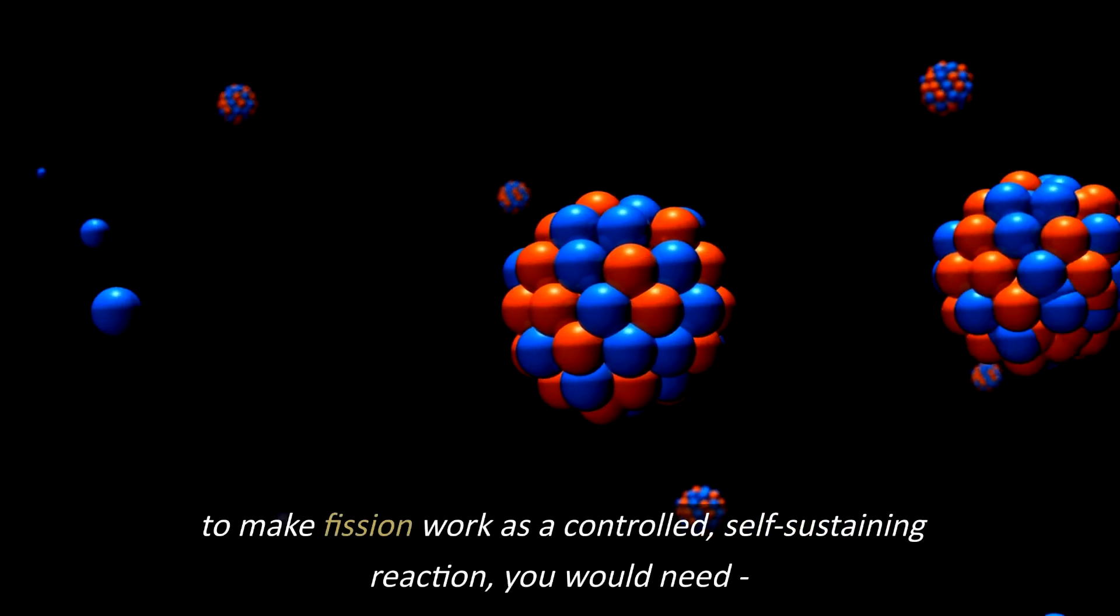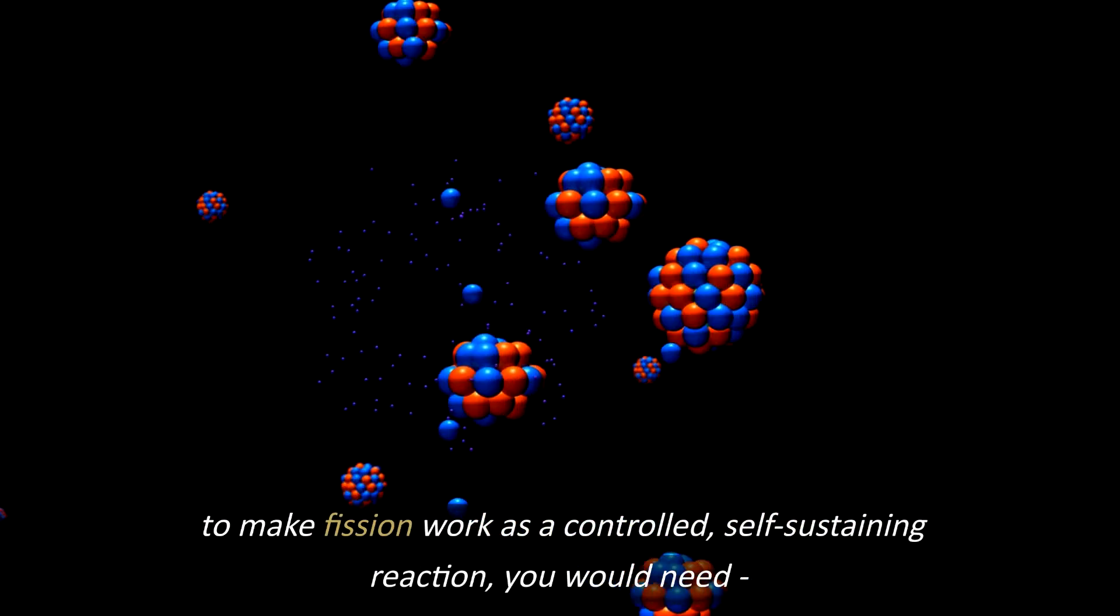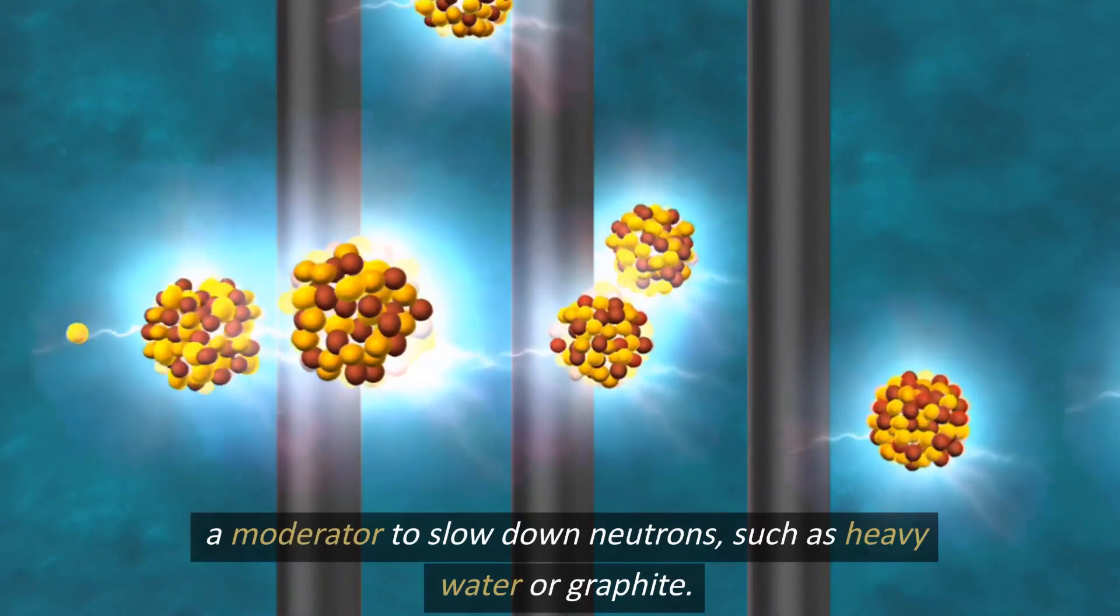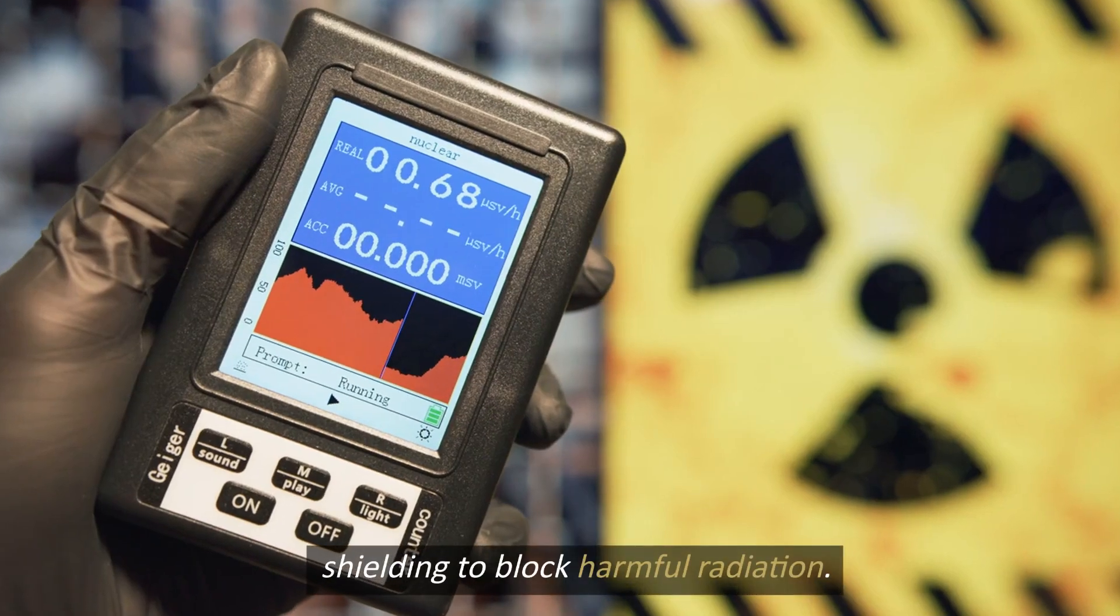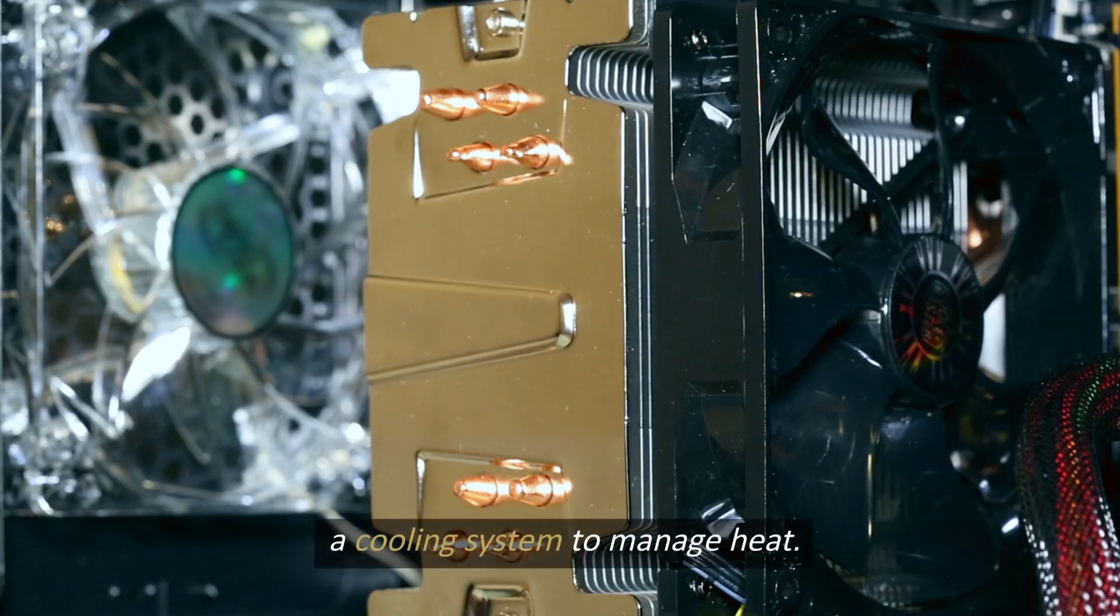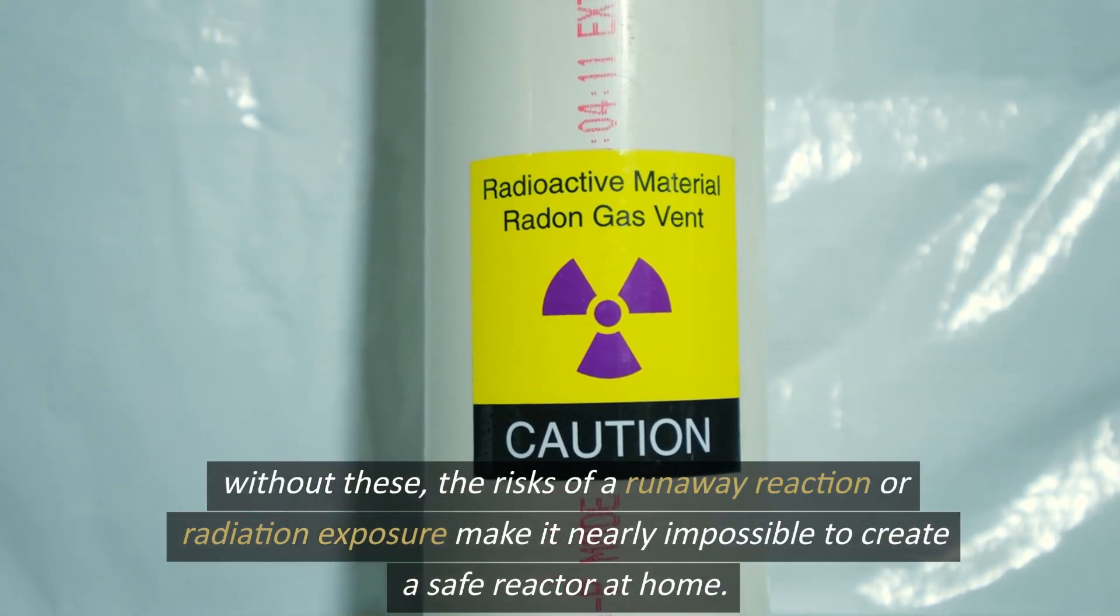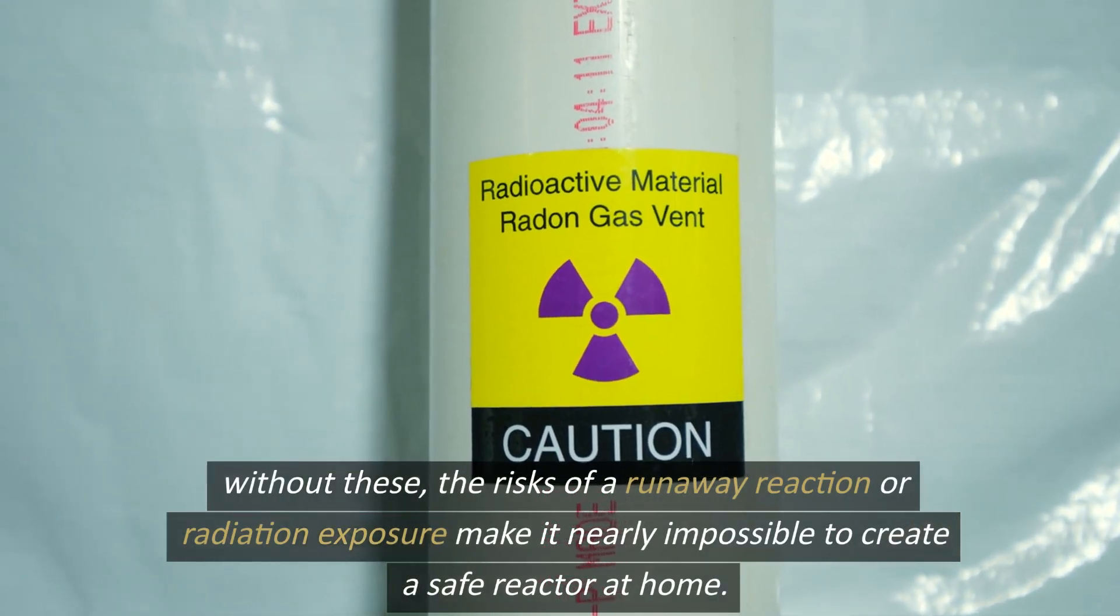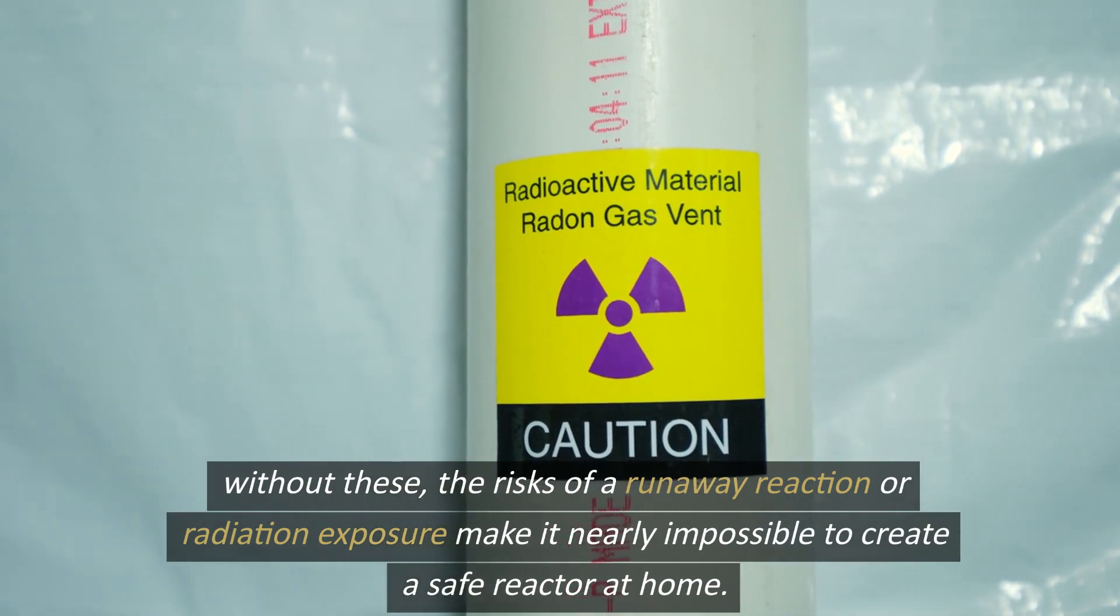To make fission work as a controlled, self-sustaining reaction, you would need a moderator to slow down neutrons, such as heavy water or graphite, shielding to block harmful radiation, and a cooling system to manage heat. Without these, the risks of a runaway reaction or radiation exposure make it nearly impossible to create a safe reactor at home.